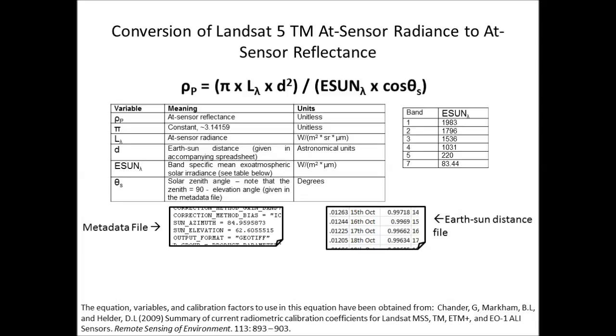Let's go through the equation bit by bit. First, the first variable we have is the at-sensor reflectance, which is what we're trying to get out of this equation. That will remain our unknown variable.